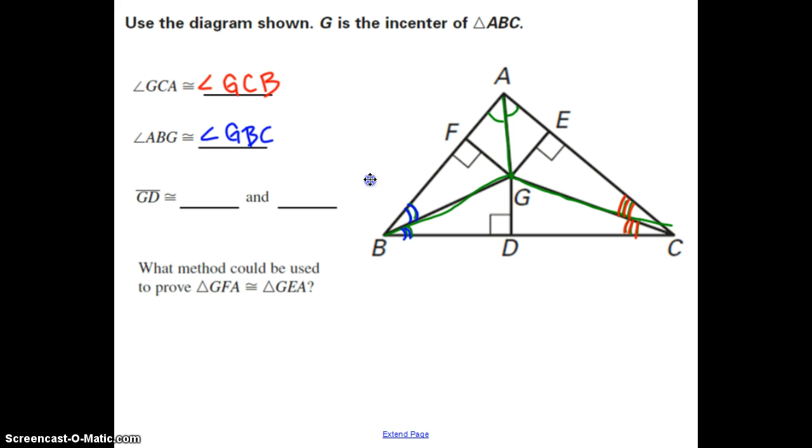Remember, I know some of us need extra practice on labeling our angles with three vertices, so make sure, kind of like connecting the dots, you're tracing out that angle. Then lastly, we have, using the special property of the incenter, segment GD, that's the distance from the incenter to the side, is going to be congruent to GE and GF.